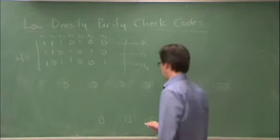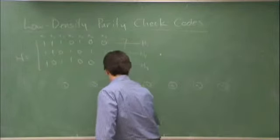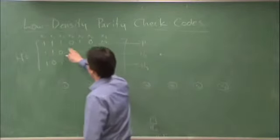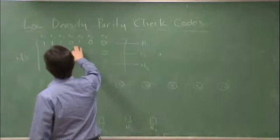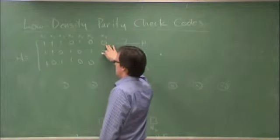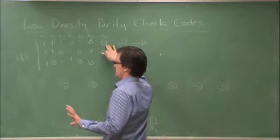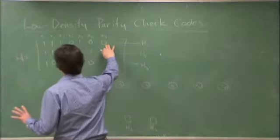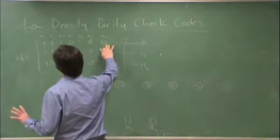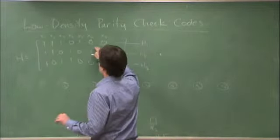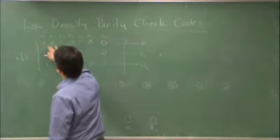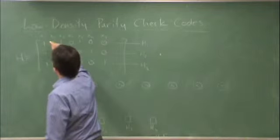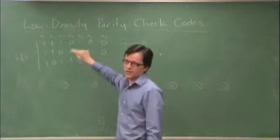And what we do is we connect the factors to the variables where we see ones in the parity check matrix. Because this row, this parity check, each row of H represents a certain check on the parity of the code word. And this check is actually independent of X4, X6, and X7 because these zeros appear here. So it's only a function of X1, X2, X3, and X5.